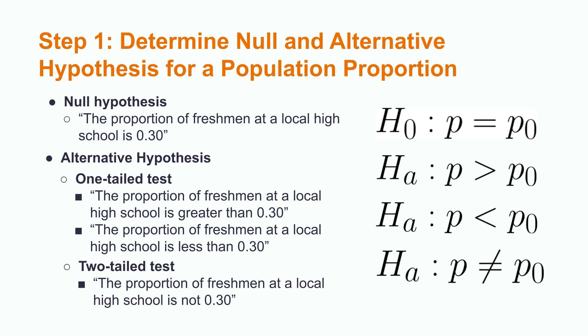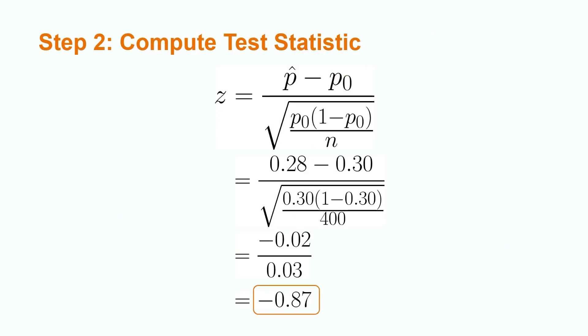A two-tailed test uses a does not equal sign. An example of a two-tailed hypothesis test would be: the proportion of freshmen at a local high school does not equal 0.30. A z-test statistic is used for population proportions.